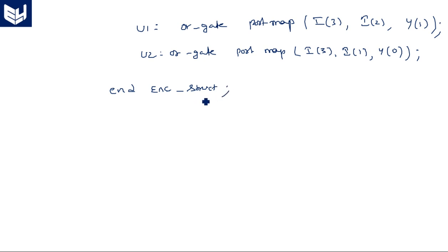This is the structural style of VHDL model for the 4x2 encoder. In this way we can write three styles very simply. Thank you.